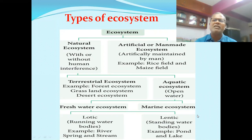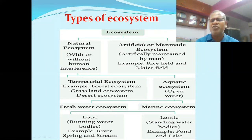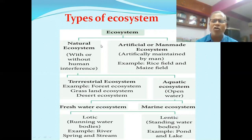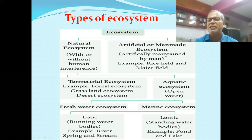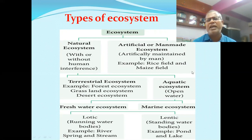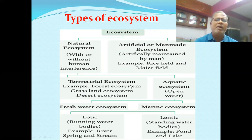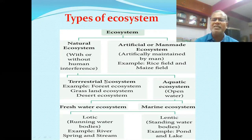In the general classification, ecosystem is of two types: natural and artificial. In natural ecosystem, the involvement or interference of humans may be present or absent. In artificial ecosystem, it is artificially maintained by human beings — rice fields, maize fields, and sugarcane fields are examples.